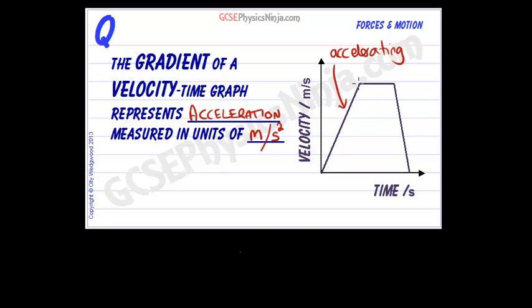Now at the top of the graph here, we see it's flat. So our velocity is remaining the same all the way along as time ticks on, and so we're not accelerating. We're just going along at a constant speed - this is constant velocity.